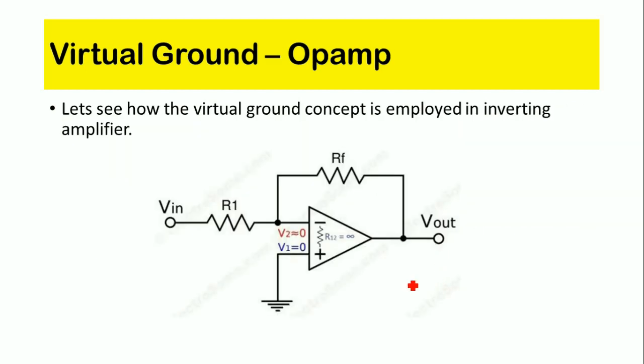Here is the circuit representing an inverting amplifier using an op-amp, that is, an operational amplifier. It is called an inverting amplifier because the input voltage Vin is connected to the inverting terminal of the operational amplifier. Now we will see the virtual ground concept in this inverting amplifier.